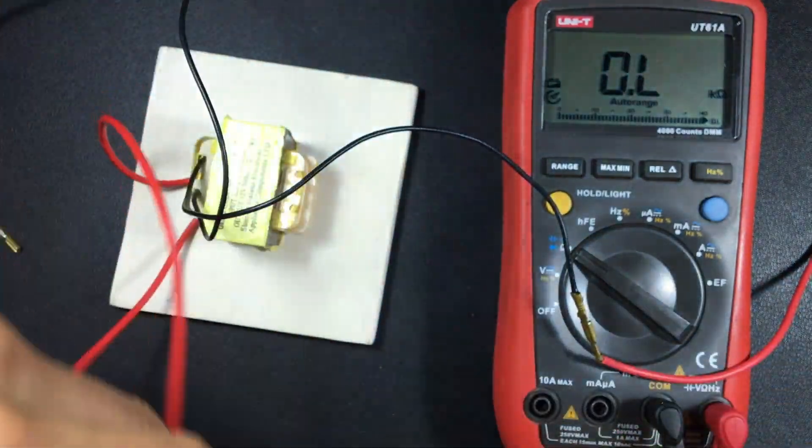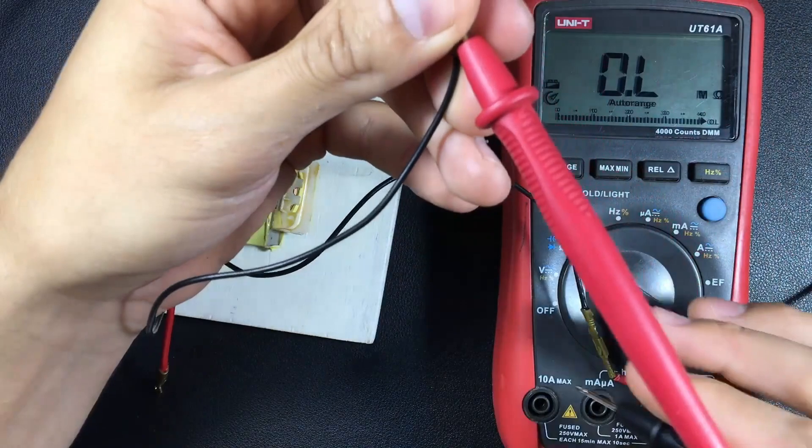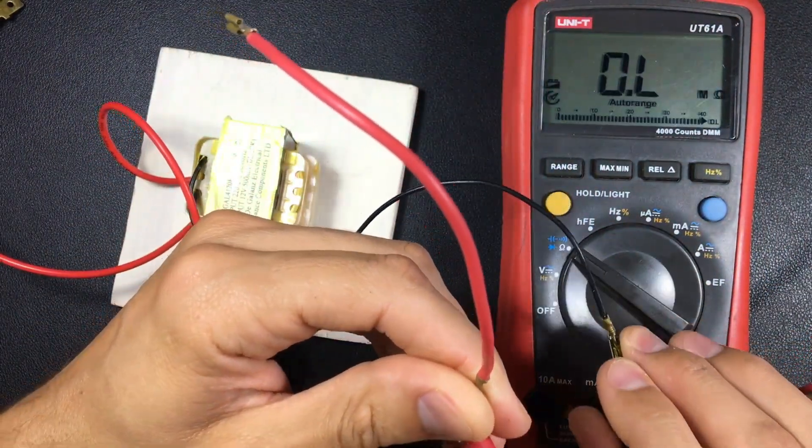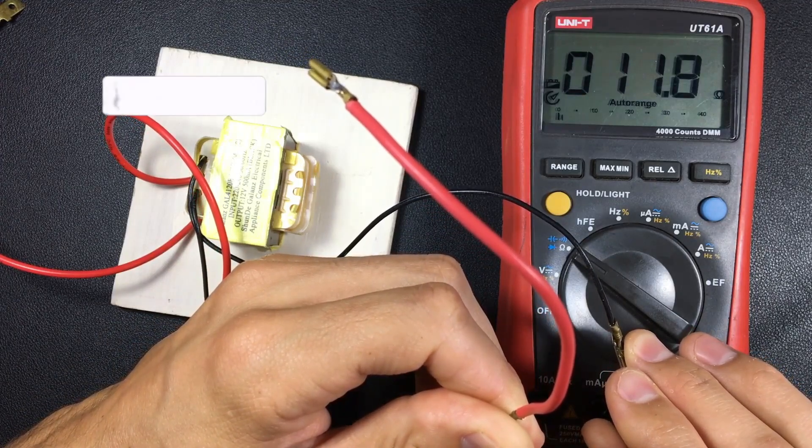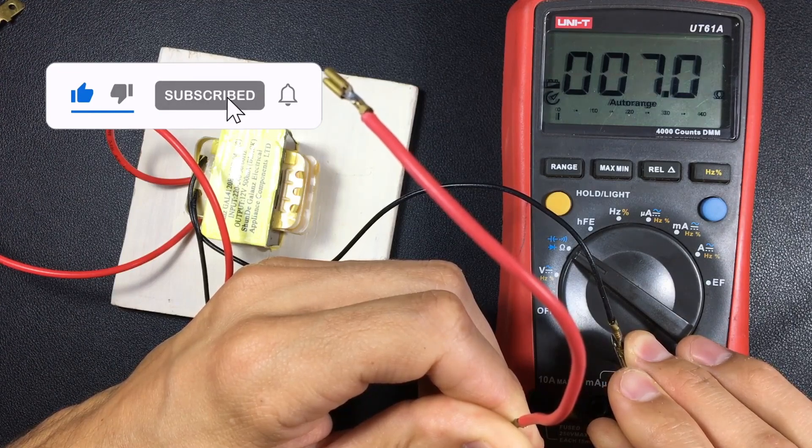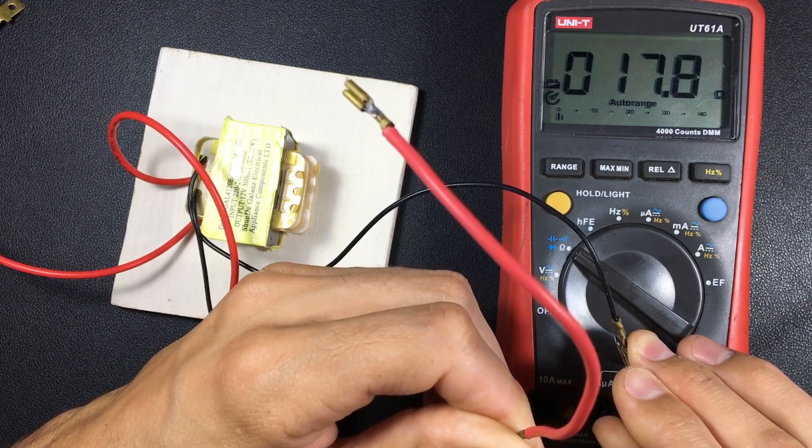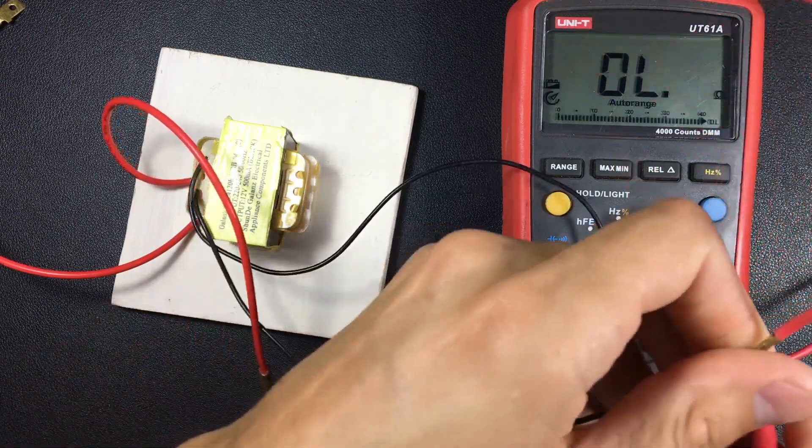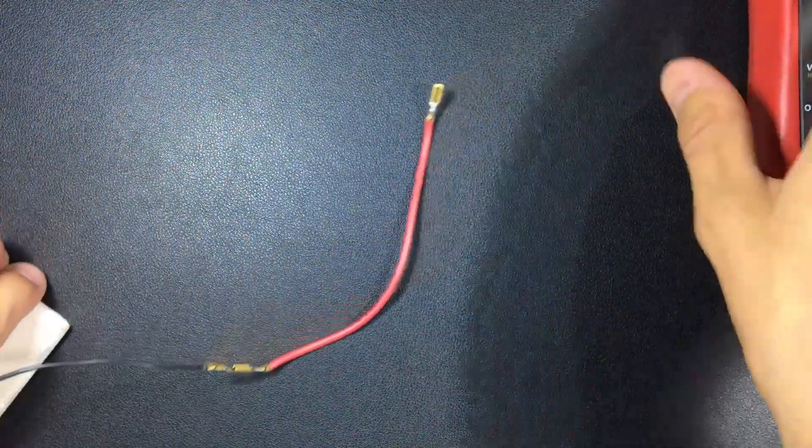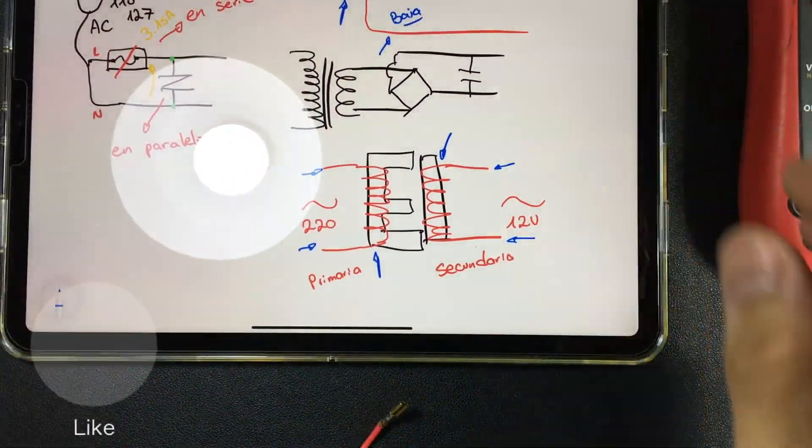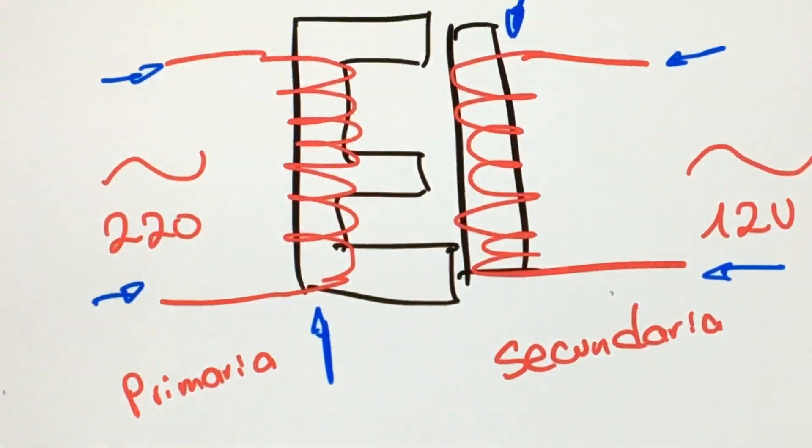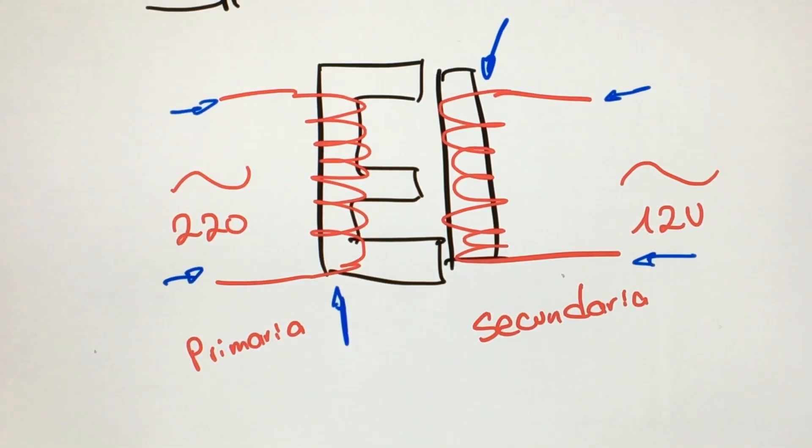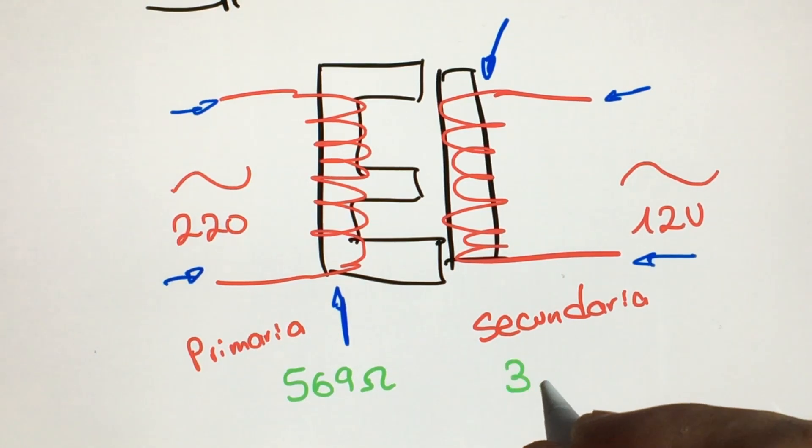We are going to confirm the secondary side. And on this secondary side we now have approximately 3 ohms. What does this tell us? Let's draw it to understand it better. On the primary side we find 569 ohms, and on the secondary side we just found 3 ohms.